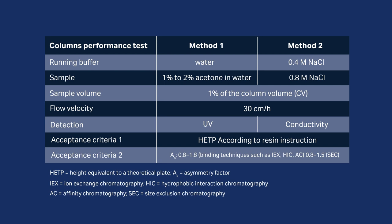There are two methods used for the performance test. One is using distilled water as mobile phase, 1% acetone as sample, and testing UV absorption at 280 nm wavelength. The other uses 0.4 molar sodium chloride as mobile phase, 0.8 molar sodium chloride as sample, and the conductivity curve is evaluated. The sample volume of these two methods is 1% of the column volume. The flow rate to use for both methods is 30 cm per hour.